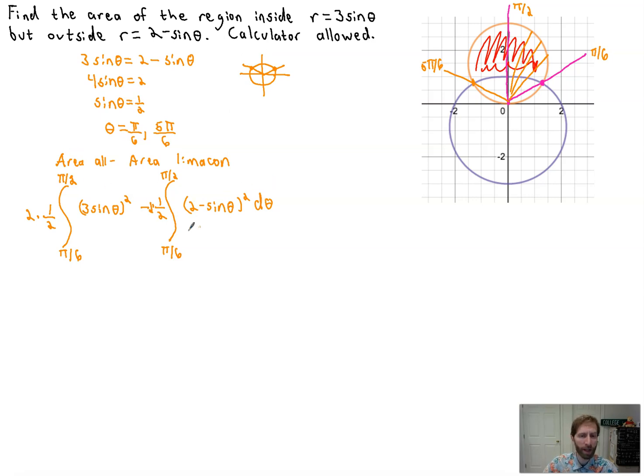Or you could do it, and I'll do this as one integral, from pi over 6 to 5 pi over 6. You could just sweep out the whole area from here to here. And we're going to do the same exact setup. The area of the circle, which includes the area that we want,